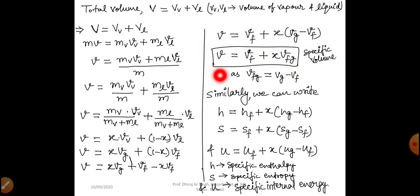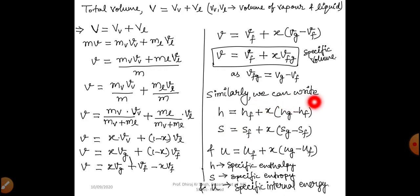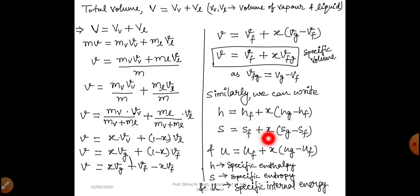Similarly, for the wet region we can write equations for all thermodynamic properties: specific enthalpy h = hF + x·(hG − hF), specific entropy s = sF + x·(sG − sF), and specific internal energy u = uF + x·(uG − uF).